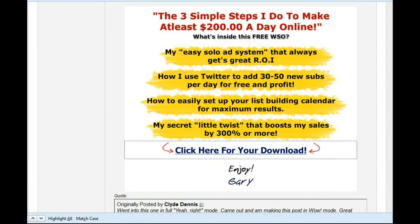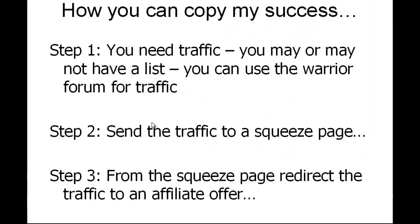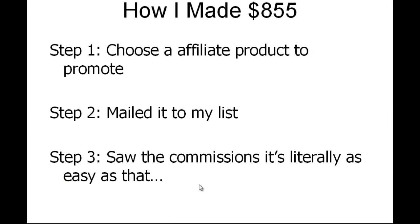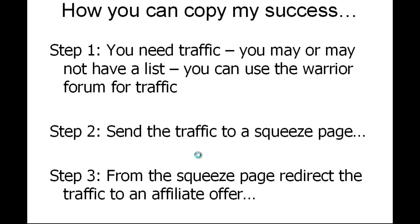To recap: you send traffic from the Warrior Forum to your squeeze page, and from the squeeze page you redirect the traffic to an affiliate offer — it's literally as simple as that. Once you've built a list of a couple thousand subscribers, you can go back to the model I use: choose an affiliate product, mail it to your list, and see the commissions in your account. I hope you've enjoyed this short case study — I look forward to seeing you in the next WSO.